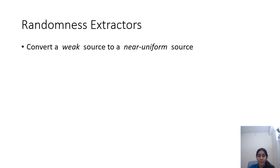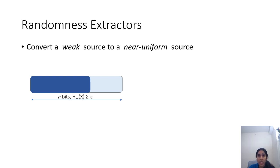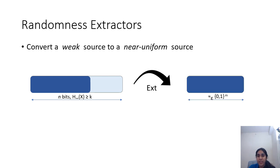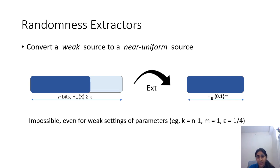Randomness extractors are algorithms that help convert these weak sources of randomness into nearly uniform sources. Say we have a weak random source with k bits of entropy on an n-bit input space. Ideally, we would like to have a deterministic algorithm that converts this into a nearly uniformly random source on m bits, where m can be as large as k. Unfortunately, it turns out that this dream deterministic extractor simply cannot exist, even for really weak parameter settings — for example, when we just want to extract one single bit of randomness, and the source has min entropy n-1, and we want the resulting distribution to have statistical distance at most 0.25 from uniform.